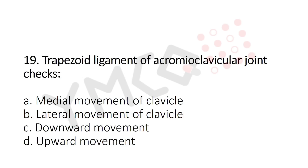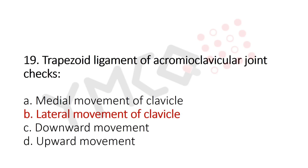Question 19: The trapezoid ligament of the acromioclavicular joint checks — option A: medial movement of the clavicle; option B: lateral movement of the clavicle; option C: downward movement; option D: upward movement. The answer is option B: lateral movement of the clavicle.